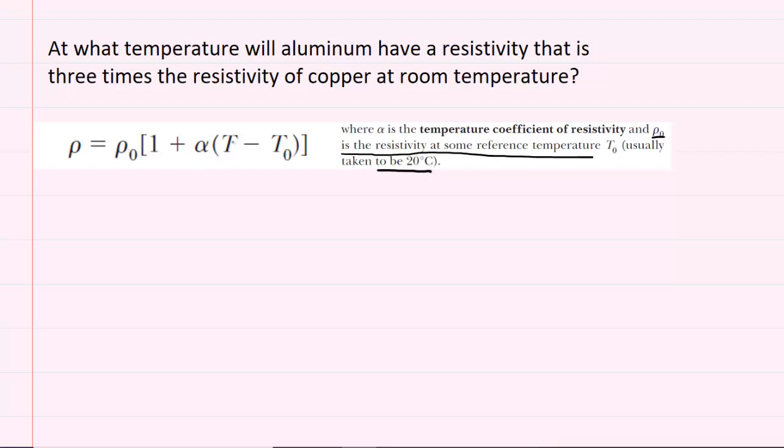The temperature without a subscript is actually the temperature that we are looking for. So this is the unknown temperature that aluminum will have a resistivity that is three times that of copper. And then we have this alpha value, which is a temperature coefficient of resistivity. And the alpha value, along with the resistivity at the reference temperature, those are values that are obtained from a table. So let's take a look at that table.